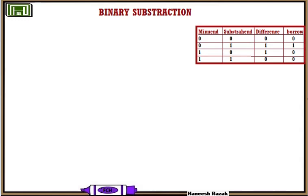The last one: 1 minus 1, that is 0. Borrow is 0. You need to memorize this chart before doing subtraction.